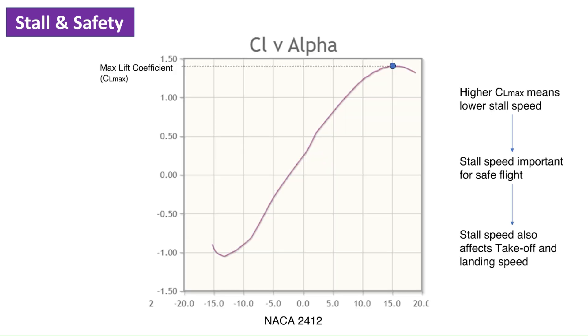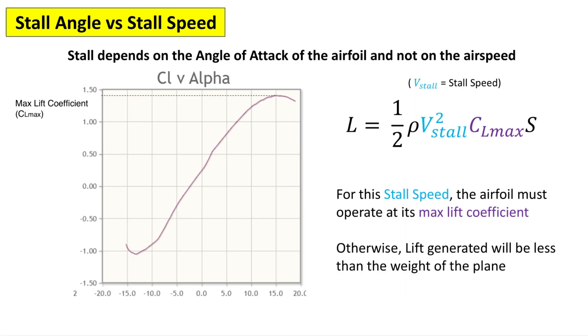As we saw in the last video, CL max is the maximum lift coefficient an airfoil can generate before stalling. A higher CL max gives a lower stall speed for the same wing loading. It should be noted that stall is dependent on the angle of attack and not on the speed. An airfoil can be made to stall at any airspeed if the angle of attack is large enough.